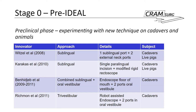Stage zero, the pre-IDEAL or pre-clinical phase, is where experts around the world start thinking about and experimenting with a new technique in cadavers or animals. For this technique specifically, the authors identified five relevant papers. Experimentation was originally conducted in cadavers and live pigs with a variety of different approaches. Importantly, at this stage there is no single gold standard technique, but rather a variety of techniques that are experimented with and then refined in following stages.